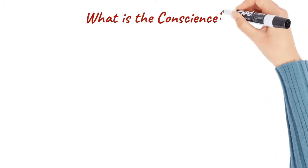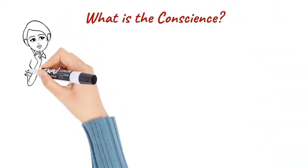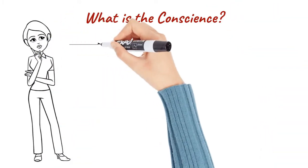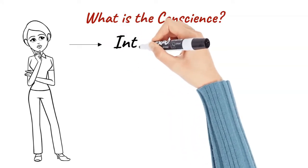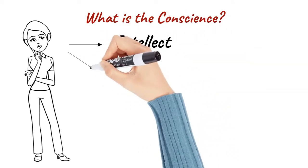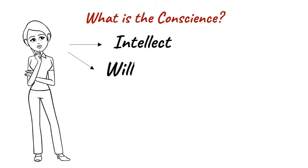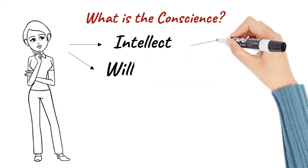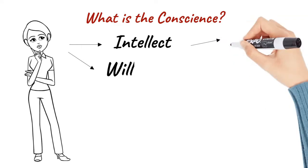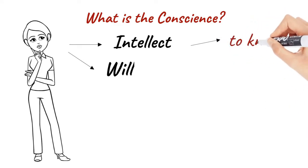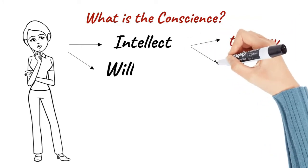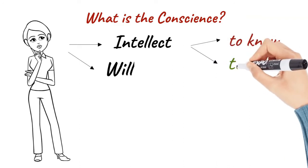So what is the conscience? In the last class, we discussed the intellect and the will as the faculties that make us rational beings. The intellect has two functions: to know, which informs us of our choices, whether we do this or that, to buy this or that, to eat this or that; and to judge, which decides which action to choose.